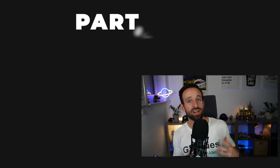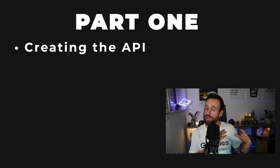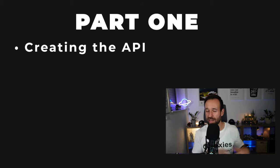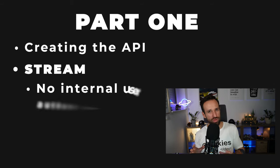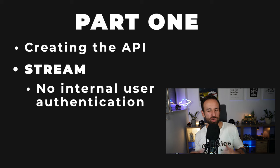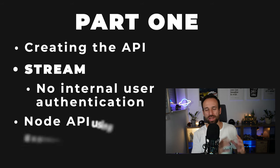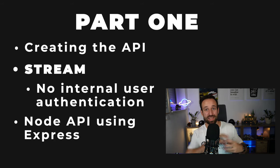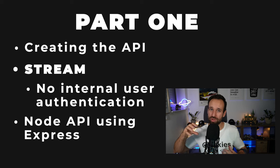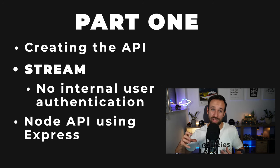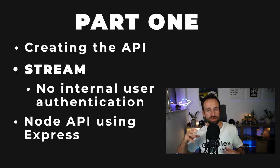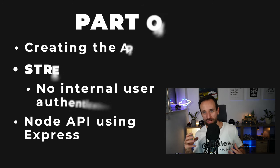In the first part of this video we will focus on an API. Stream has no internal user authentication built in, so we're going to build a quick Node API with Express that connects to Stream using secret keys. We don't want to do this from our React Native app — we want to do this in a server environment. We'll talk about how it works to create our tokens.